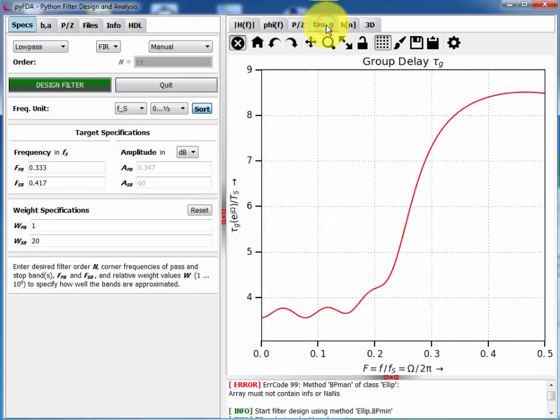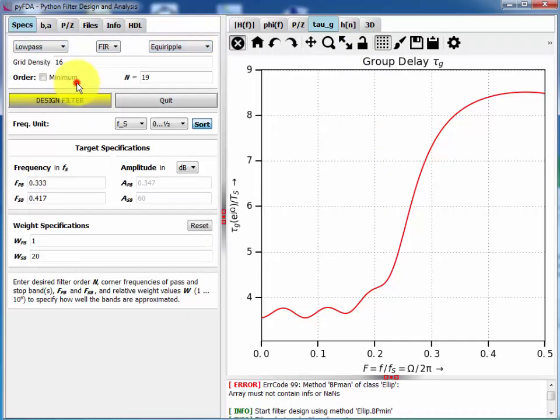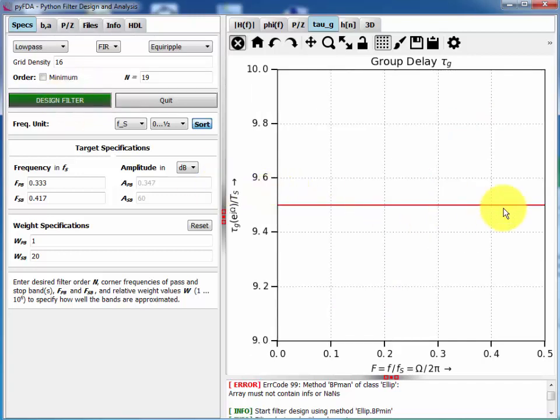Then you can also have a look at your group delay. Okay. This is still the group delay of my warped filter. So it looks a bit strange. This is the group delay I am expecting of a linear phase FIR filter.